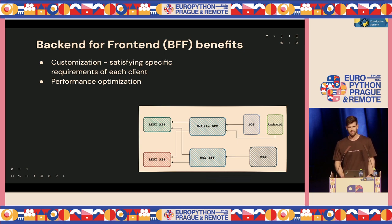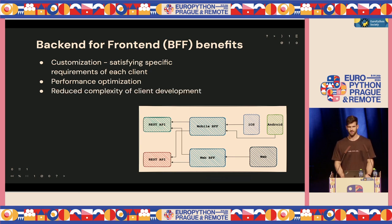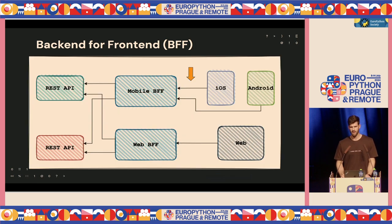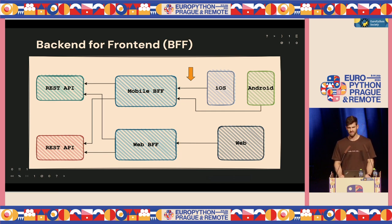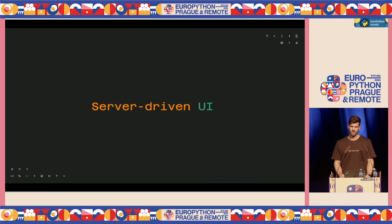Let's summarize the main advantages of BFF adoption. First is definitely customization — we now have the option to build really tailored endpoints for the specific needs of each client. It can also bring performance optimizations: since we typically make only one request from the client to the BFF layer, we can easily prevent over-fetching of data. And the complexity of client development is significantly reduced. This brings us to the need for a new style of API for serving higher-level views — which are not classic REST API resources.